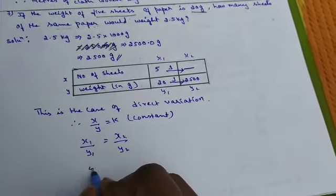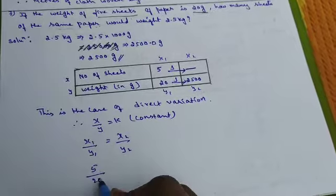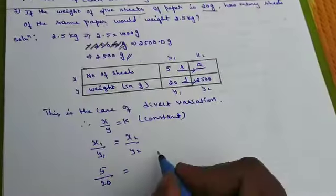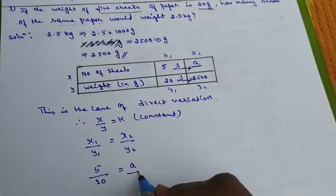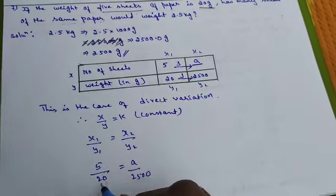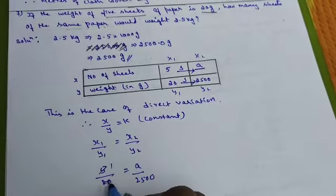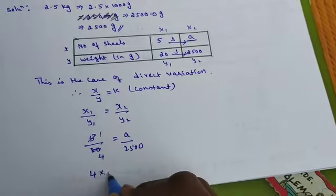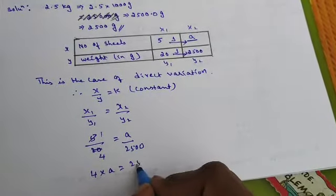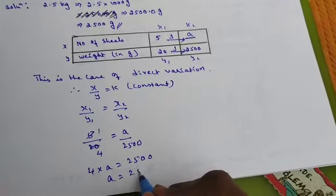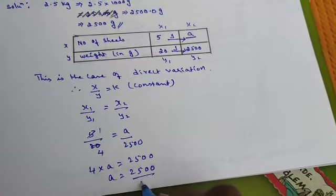Then substituting the values: 5 by 20 equals, this is unknown so let me take it as A, A divided by 2500. Cross multiply: 4 into A equals 2500. Multiplication changes to division: 2500 divided by 4.